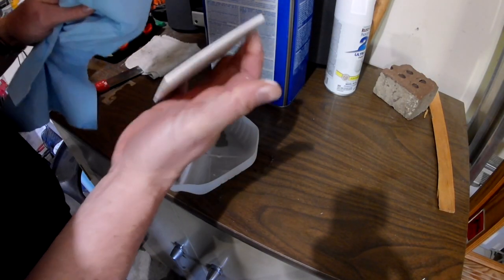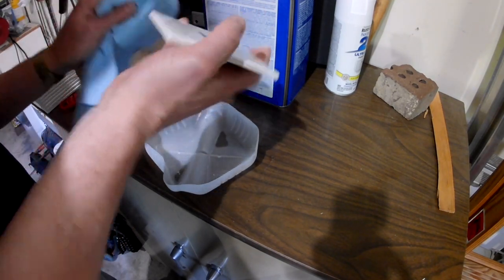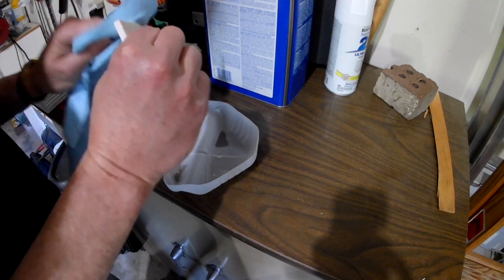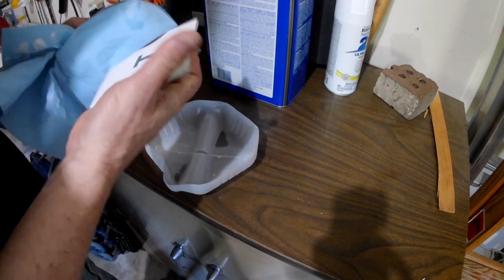One of the downsides of using the putty knife is it tends to push the paint onto the sides of the tile, which adds to the cleanup process. Now I'm cleaning the paint off the side of the tiles.